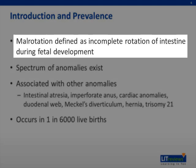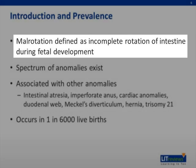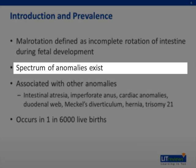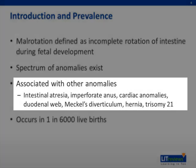Malrotation is defined as the incomplete rotation of the intestine during fetal development. A spectrum of anomalies exist. It is associated with other anomalies, including intestinal atresia and imperforate anus, cardiac anomalies, duodenal web, Meckel's diverticulum, hernias, and trisomy 21.